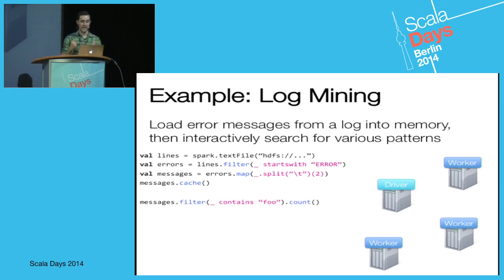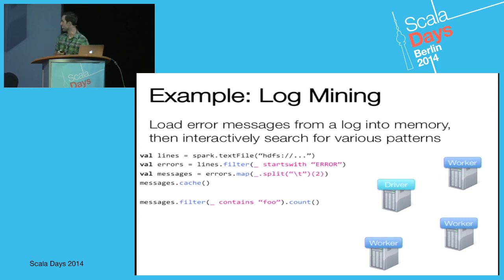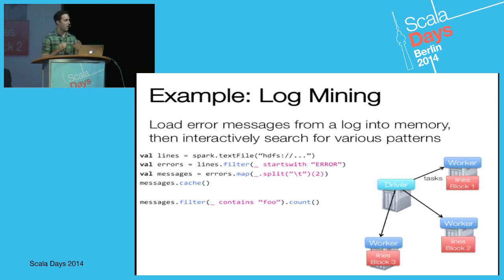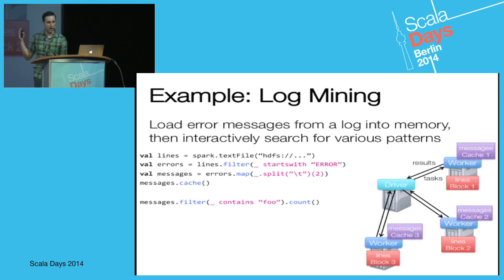Now I can perform an action — I'm going to pull out all messages containing 'foo' and do a count. This fires up a job across the cluster. The driver serializes those functions and ships them to all machines in the cluster where they'll be executed in parallel. We read data off HDFS, apply the transformations, and return the results. Since we marked the messages RDD as cached, we'll also keep all those messages stored in RAM around the cluster.